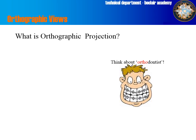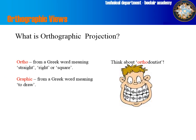Well, if you see there, there's all these braces on this boy's teeth. The orthodontist is trying to straighten somebody's teeth. So ortho is a Greek word meaning straight, right or square. The term graphic from the Greek word meaning to draw. So when we put those two together, orthographic means to draw objects looking straight on or square onto the object.